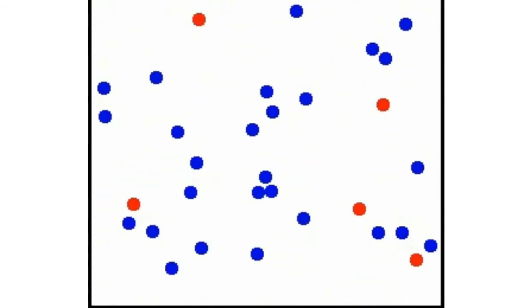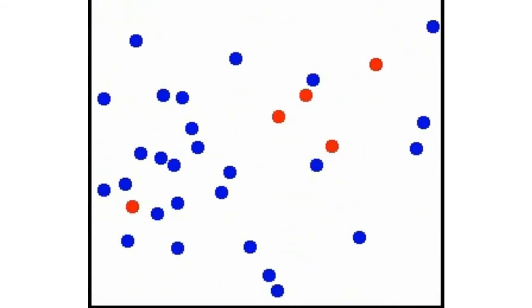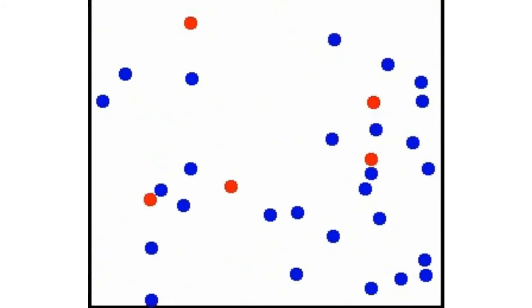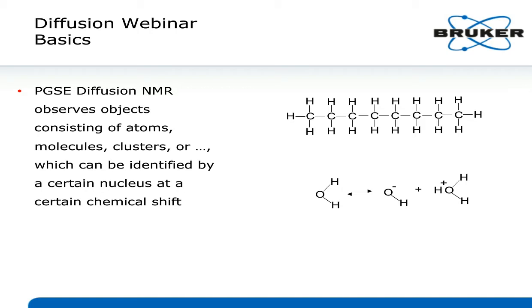We want to measure the diffusivity in such an environment, either of the blue or the red components. In general, in PGSE Diffusion NMR, we observe objects which consist of atoms, molecules, or clusters of them. All of them can be identified by a certain nucleus at a certain chemical shift. For example, isooctane has many protons. All the protons are tightly bound to the molecule, and the diffusion of each of them will be the same as the diffusion of the molecule.